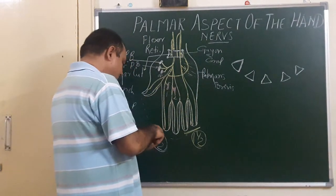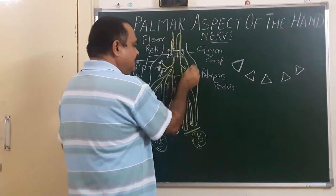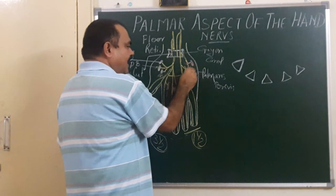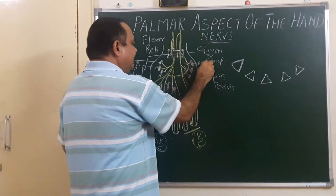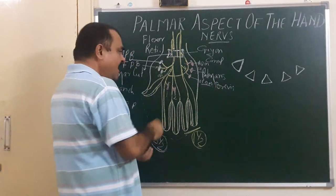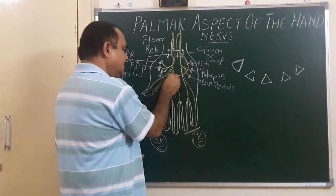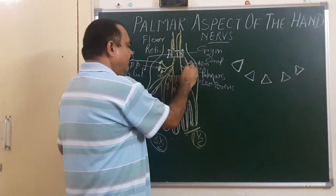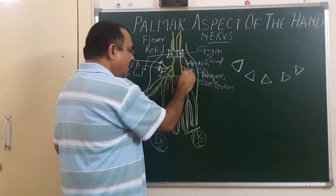The muscles supplied include the hypothenar group: abductor digiti minimi, flexor digiti minimi, and opponens digiti minimi. It also gives branches to 4 palmar interossei — 1st, 2nd, 3rd, and 4th — and 4 dorsal interossei. It gives branches to the 3rd and 4th lumbricals, since the 1st and 2nd lumbricals are supplied by the median nerve.